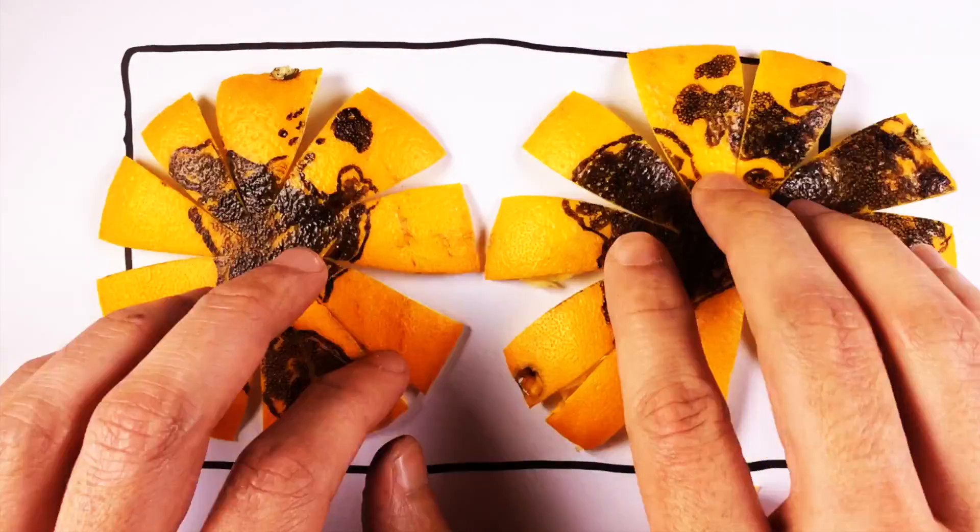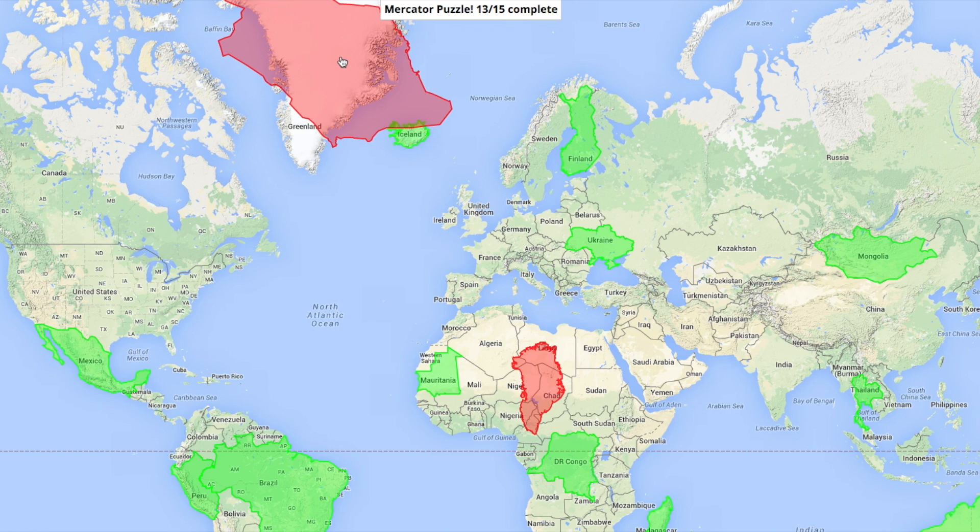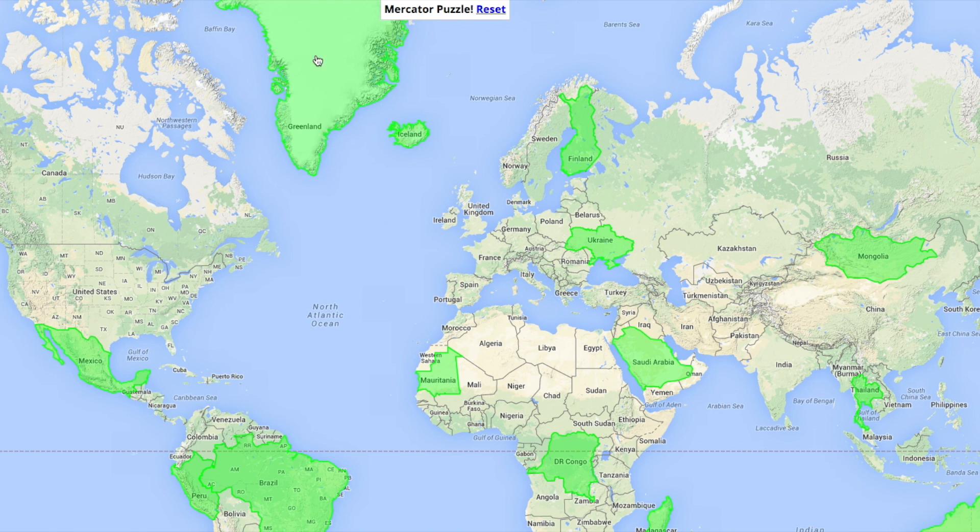Modern maps today, like the Mercator, distort the sea and land masses to compensate for the empty spaces we just mentioned. This is the Mercator puzzle, provided by Google. It shows you how countries change in size based on their location on the map. This big piece of land in the north is Saudi Arabia, and this little guy in Africa is Greenland.